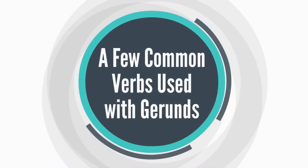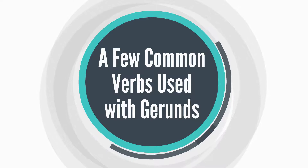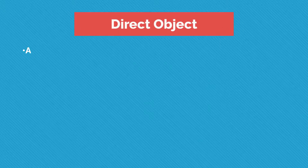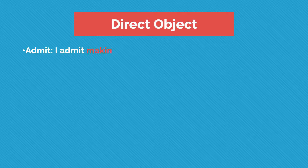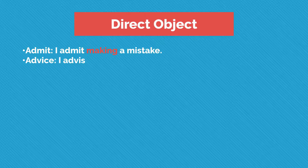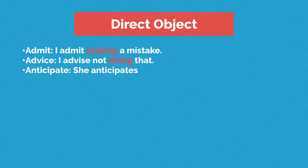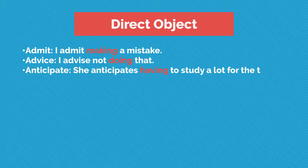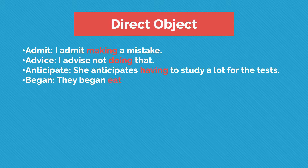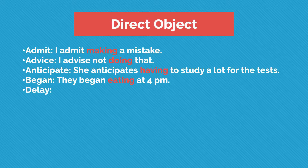A few common verbs used with gerunds. Admit: I admit making a mistake. Advise: I advise not doing that. Anticipate: She anticipates having to study a lot for the tests. Began: They began eating at 4 p.m.